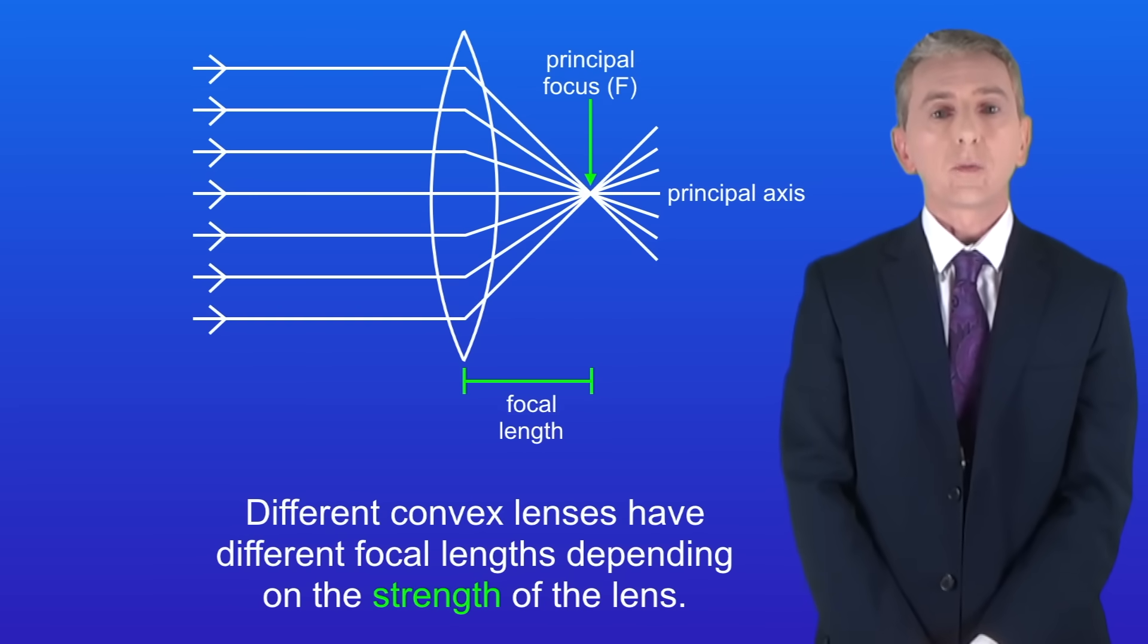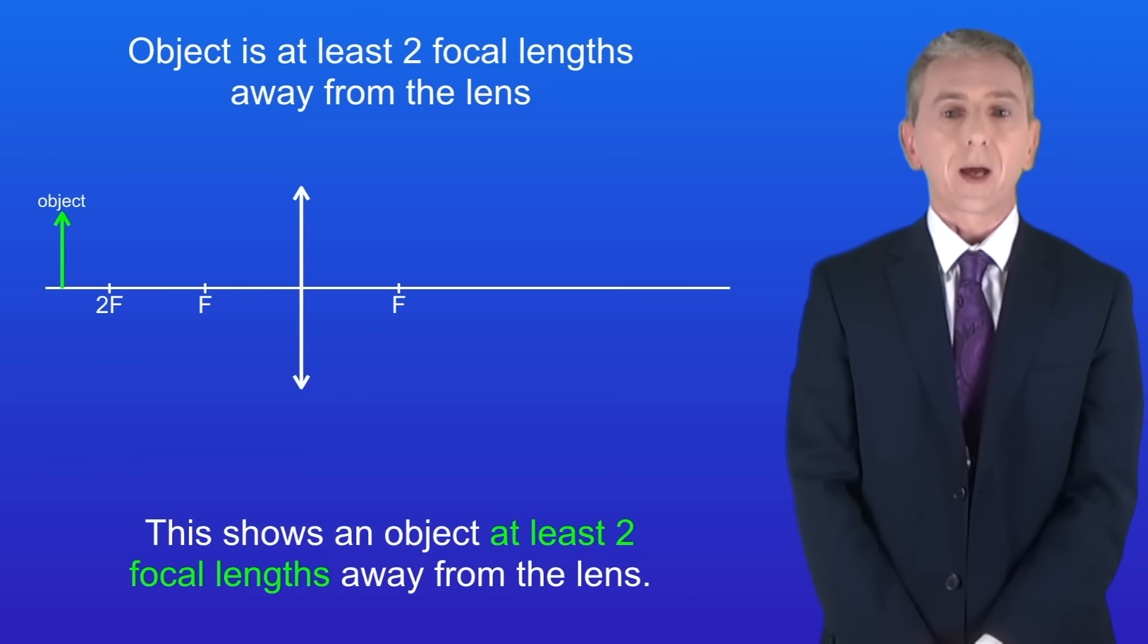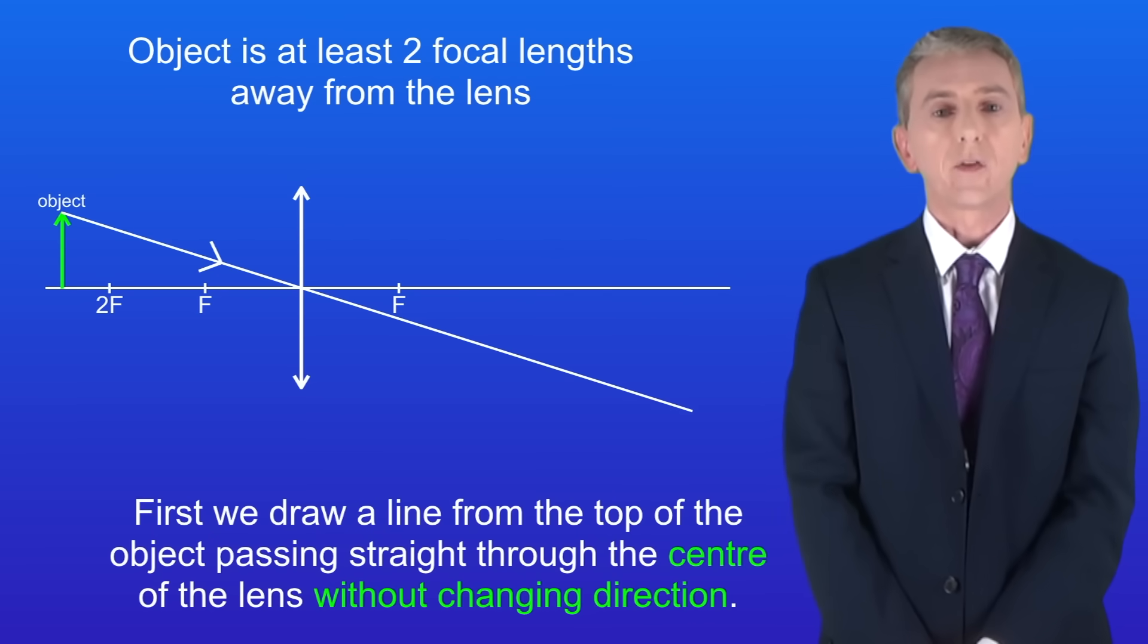Okay we're going to look now at how to produce ray diagrams for a convex lens. We're going to start by placing the object at least two focal lengths away from the lens. First we draw a line from the top of the object passing straight through the center of the lens without changing direction like this.